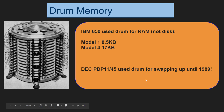Drum memory was a special, highly timing-sensitive device. It was used by the IBM 650 accounting mainframe and used as RAM — one model had 8.5 kilobytes, another had 17 kilobytes. IBM was not the only one using drum memory: the DEC minicomputer PDP-1145 used drums for paging and virtual memory swapping, and they were sold until 1989.